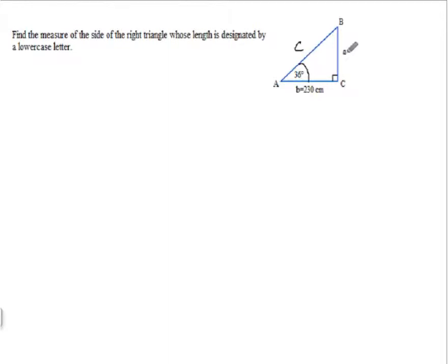So, we've got our SOH CAH TOA. So, if we're going to use the opposite side, we're forced into either using the sine or the tangent because those are the two functions that use the opposite. And then the 230 is the adjacent side to our reference angle of 36°. So, we have to use this tangent of opposite over adjacent.